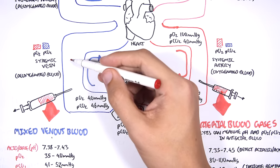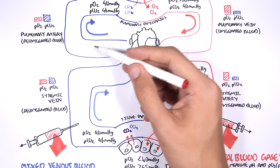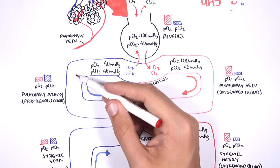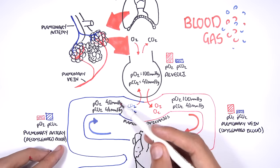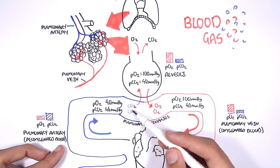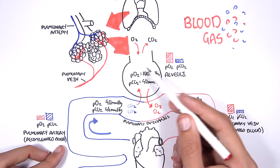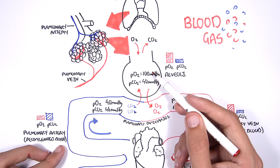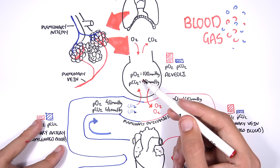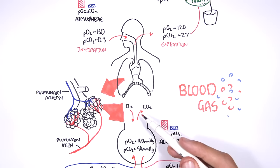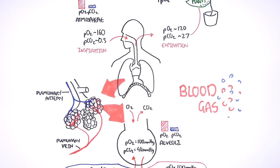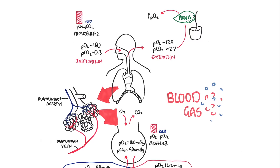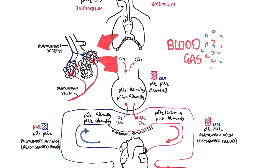This venous blood travels back to the heart where it will be pumped to the lungs, reoxygenated, and the carbon dioxide will be exhaled into the atmosphere and then used by the plants — and the cycle continues. I hope you enjoyed this video on blood gases and an introduction to arterial blood gas analysis. Thank you for watching.